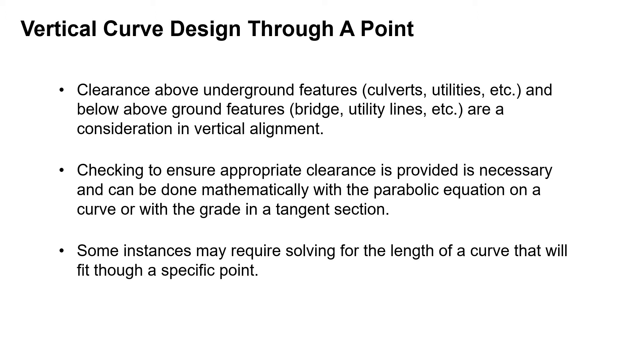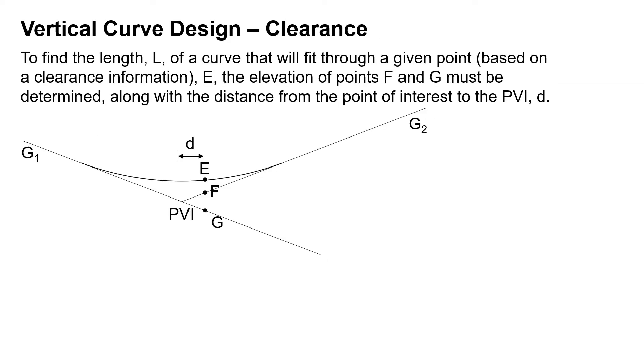To find the length L of a curve that will fit through a given point based on clearance information, you need E, which is the point on the curve that's considering the clearance, and then points F and G which are on the tangent part of the grades, along with the distance D from the PVI to your point of interest.